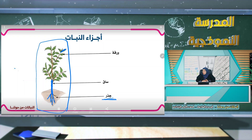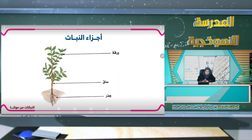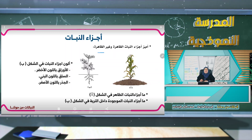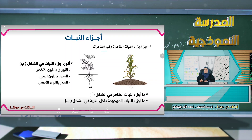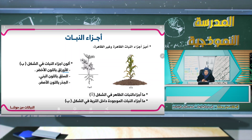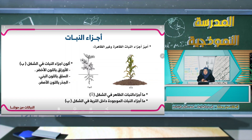عزيزي الطالب، عزيزتي الطالبة، الجزء الموجود تحت التربة نسميه جذراً. والجزء فوق التربة نسميه ساقاً، ويكون غالباً من الخشب. وكذلك هناك الأوراق وغالباً ما تكون خضراء. نميز بين أجزاء النبات الظاهرة وأجزاء النبات غير الظاهرة، أي التي تكون موجودة تحت التربة.